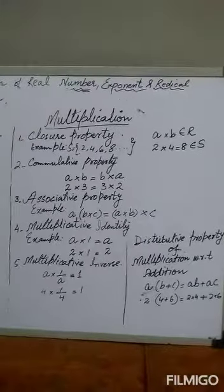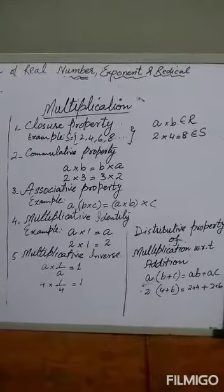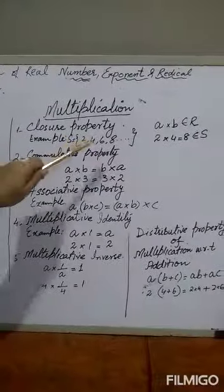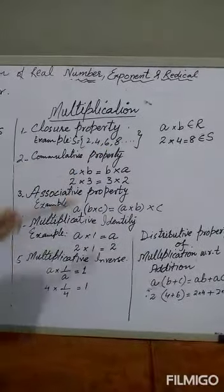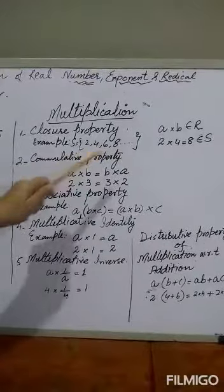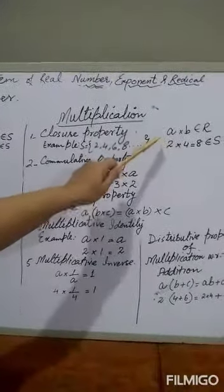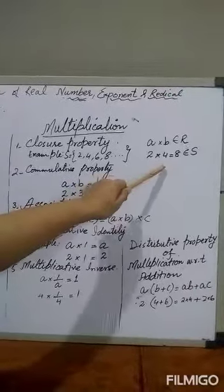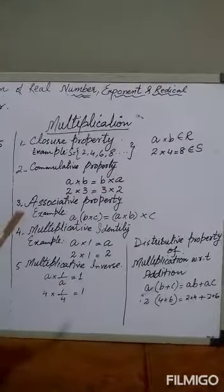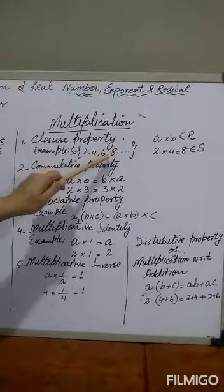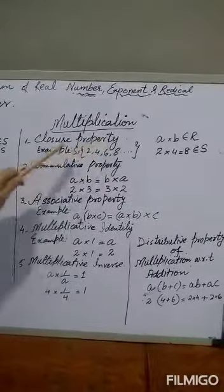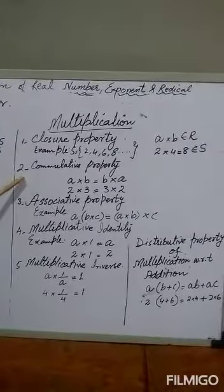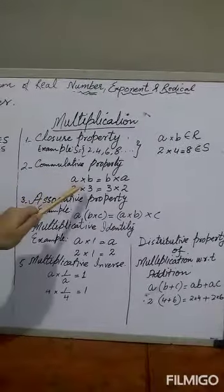Now we look at the properties of real numbers with respect to multiplication. First is the closure property: if A and B are real numbers, their product is also a real number. For example, 2 times 4 equals 8, and 8 belongs to S. Any numbers taken from S whose product is found will also belong to that set. This property is called the closure property.